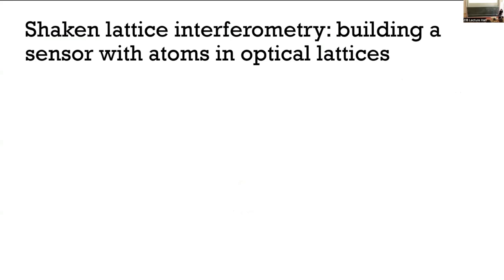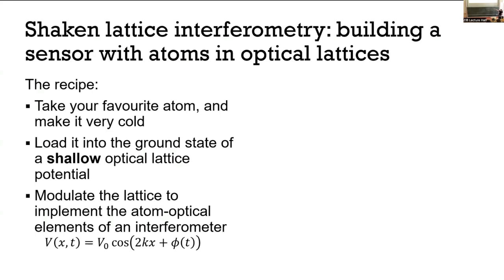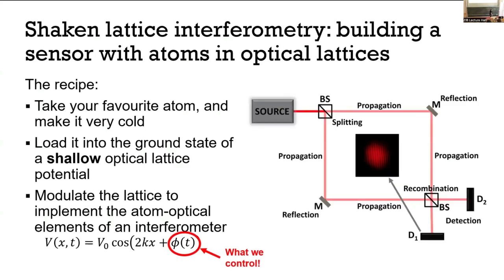So how do we build a sensor with atoms and optical lattices? The recipe is to take your favorite atom — rubidium for me — and make it very cold. You then load it into the ground state of a shallow optical lattice potential. That word 'shallow' is doing a lot of work here; we're sitting in the delocalized regime, controlling the momentum states. Then we modulate this lattice — we actually only modulate its phase — and implement the atom-optical elements of the interferometer. Here's a light interferometer: you have a source of waves, split it apart, it propagates around some path, you recombine it and detect it, and you get a lovely set of fringes.